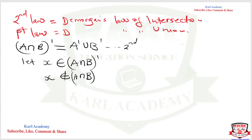Since x is a complement of that intersection, x is not a member of that intersection. This means x is not a member of A, and also x is not a member of B — meaning x is not a member of both sets. So we say x is not a member of A or...